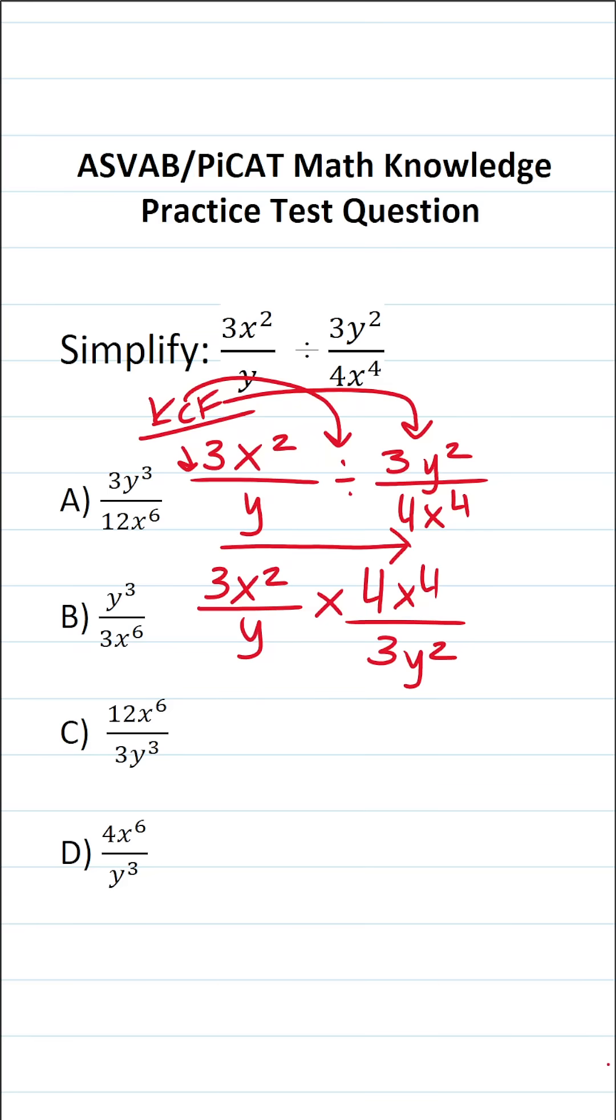Now when you multiply fractions you just multiply straight across and I'm going to do this without skipping a single step. So this becomes 3x squared times 4x to the fourth over y times 3y squared.